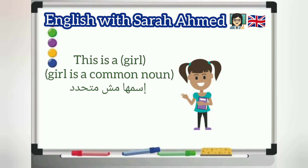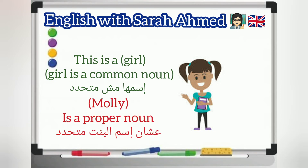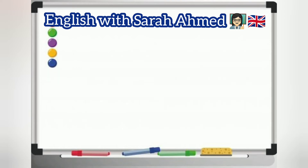This is a girl. A girl here is a common noun. And this girl's name is Molly. Molly here is a proper noun. And here's another example.